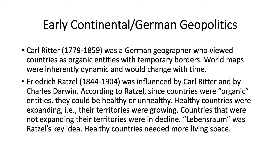Ratzel came up with the idea that countries were organic entities. You can see the emphasis on organicity here as Darwin's influence. He said that countries could be healthy or unhealthy. Healthy countries, according to Ratzel, were expanding — their territories were growing. Countries that were not expanding their territories were in decline. For healthy countries that were growing, there was a need for Lebensraum, which is 'living space' in German. That was Ratzel's key idea: healthy countries need more living space.